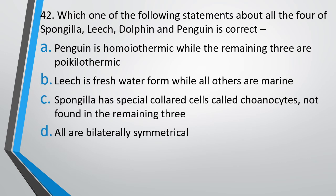Question number 42. Which one of the following statements about all four of sponge, leech, dolphin, and penguin is correct? Option A: penguin is homeothermic while the remaining three are poikilothermic. Option B: leech is a freshwater form while all others are marine. Option C: sponge has special collared cells called choanocytes, not found in the remaining three. Option D: all are bilaterally symmetrical.